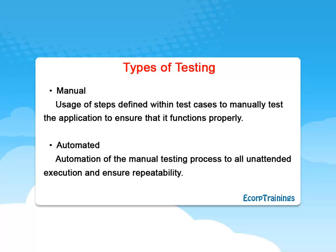QuickTest Professional has two types of testing. Manual Testing: the usage of steps defined within test cases to manually test the application to ensure that it functions properly. Automated Testing: the automation of the manual testing process to allow unattended execution.